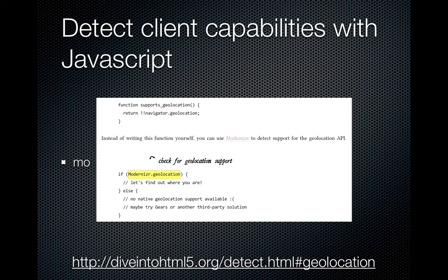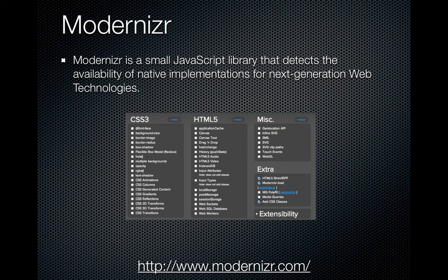There's also the ability to detect phone capabilities with JavaScript. An example is detecting whether the phone supports geolocation using JavaScript — you can offer one experience if it does and a different one if it doesn't. Modernizr is a JavaScript library specifically designed for this — you tell it which capabilities you want it to test for and it generates the code for you.